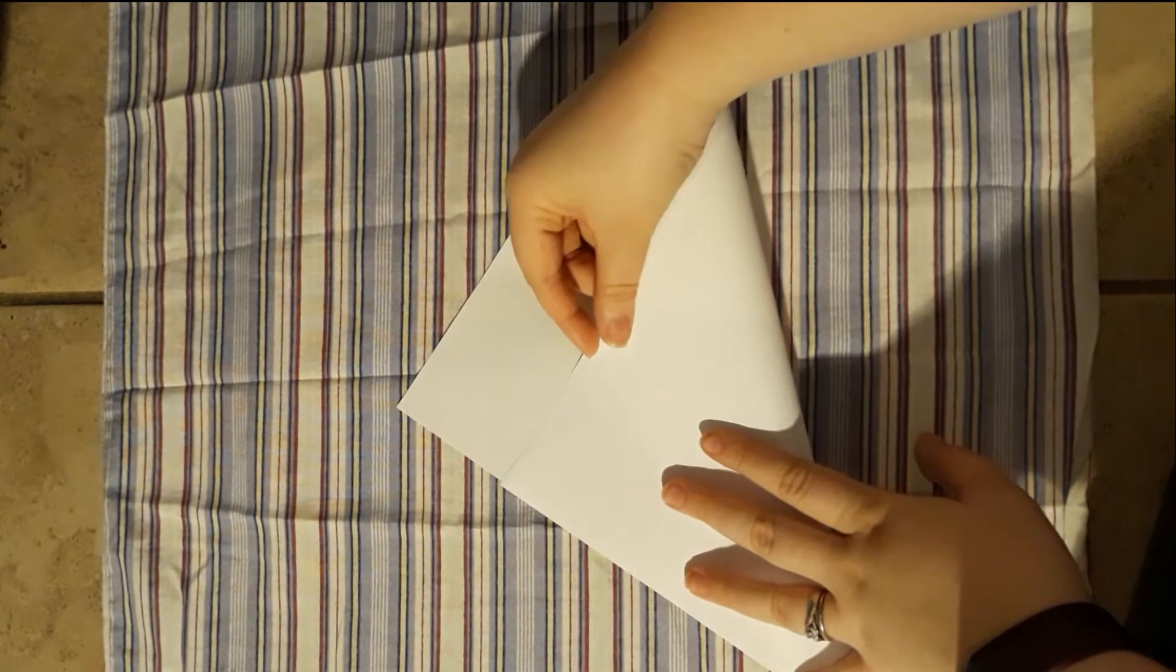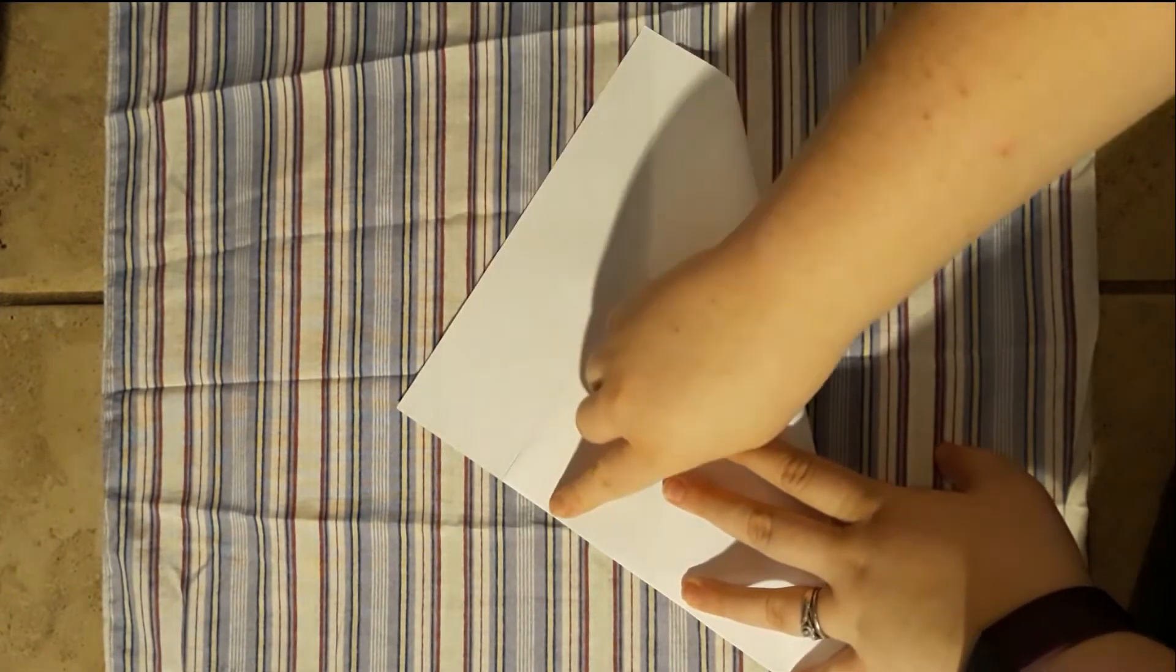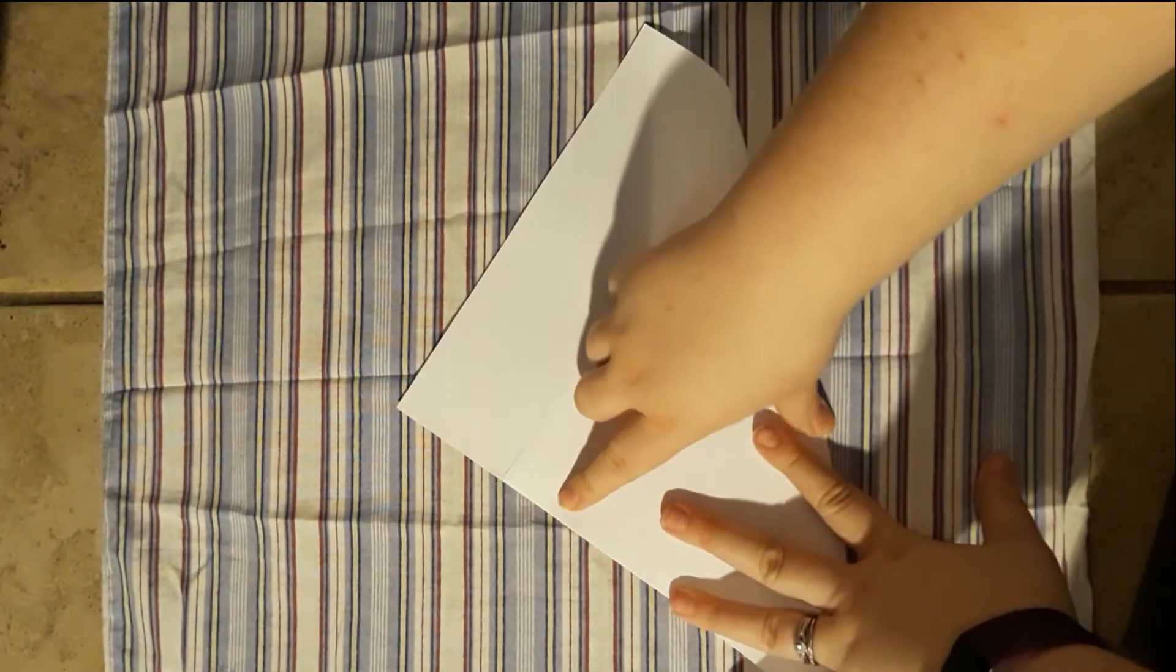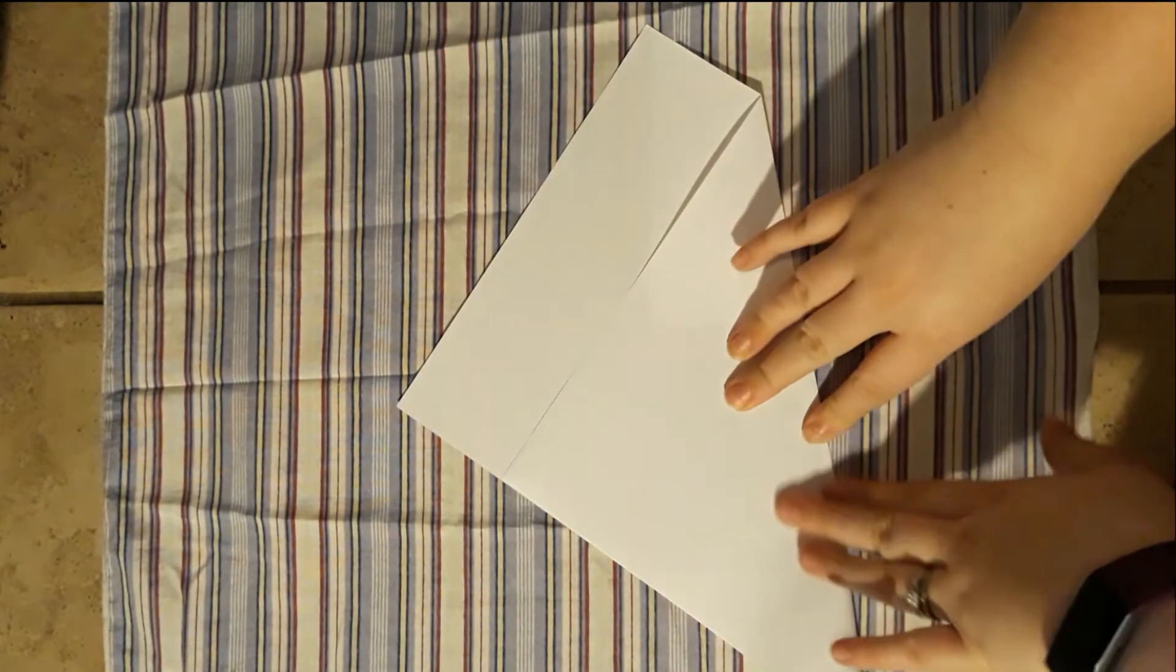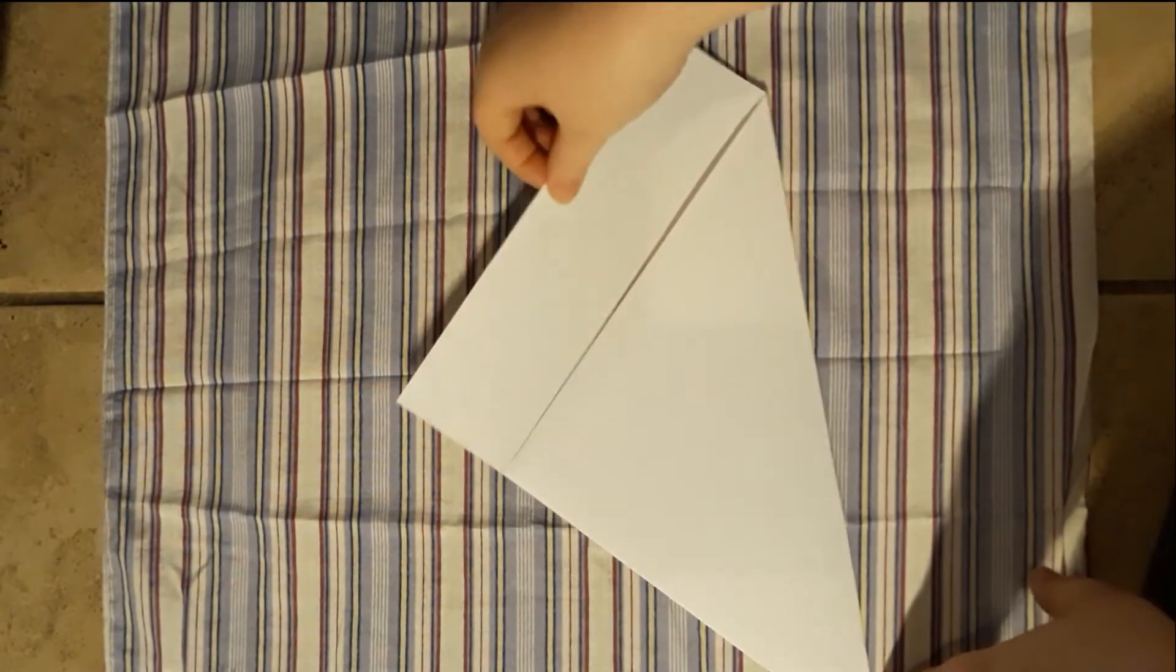First take your printer paper and fold it just like this. We need to make a square before we can start making our tangram. Make sure the paper is lined up nicely, then press down to make a solid crease.